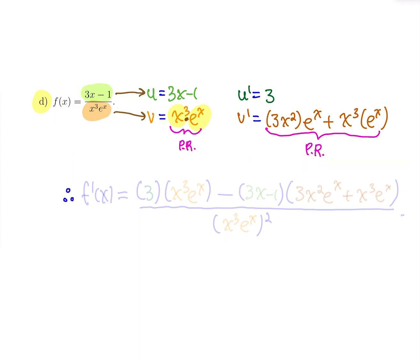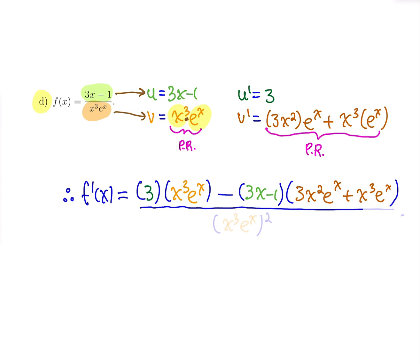Back to the quotient rule for f prime: f′ = [3 times x³eˣ minus (3x − 1) times (3x²eˣ + x³eˣ)] all over (x³ · eˣ)². You can also write the denominator as x⁶ · e^(2x), but leaving it as (x³eˣ)² is fine. As long as you put the right formulas in the right spots, that's a good answer — two rules in one, a classic question for an evaluation.